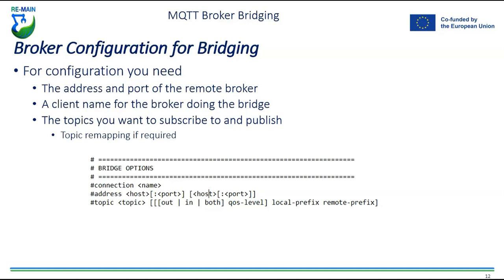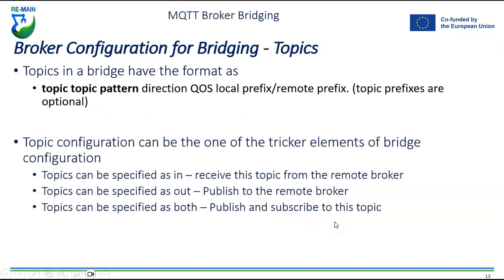You can also remap topics if required — if a topic comes in from a client and you want to remap it to a more globally accepted name, you can do that within the bridge. The configuration includes your connection name, address and port, and topic configurations. Topics in a bridge have the format: topic pattern, direction, QoS, local prefix, and remote prefix. Topics can be specified as 'in' to receive from the remote broker, 'out' to publish to the remote broker, or 'both' to publish and subscribe.